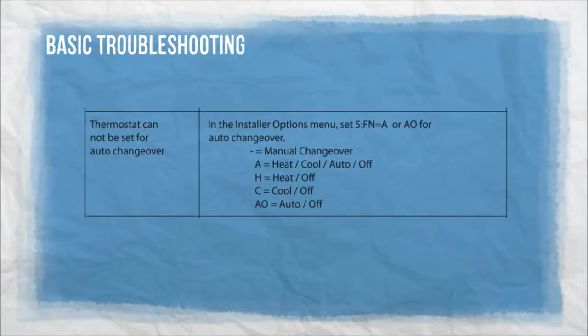Thermostat cannot be set for auto changeover. In the installer options menu, set 5FN to A or AO for auto changeover. Minus: manual changeover. A: heat, cool, auto, off. H: heat, off. C: cool, off. AO: auto, off.